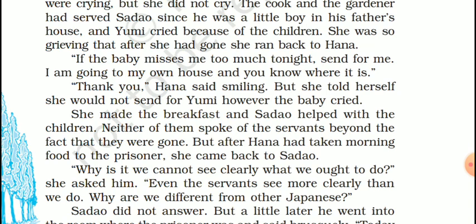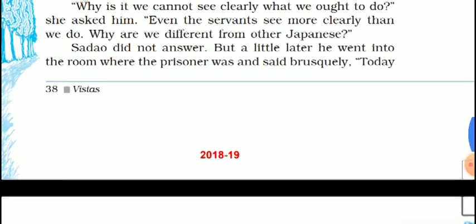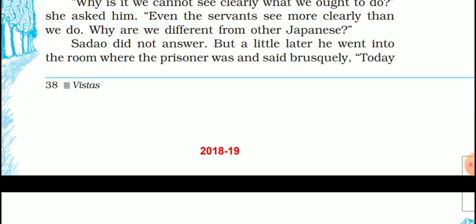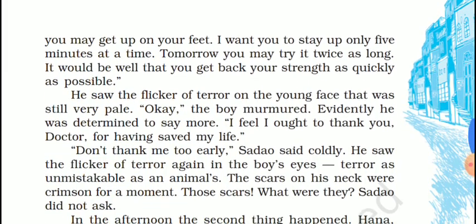She made the breakfast and Sadao helped with the children. Neither of them spoke of the servants beyond the fact that they were gone. But after Hana had taken the morning food to the prisoner she came back to Sadao: 'Why is it we cannot see clearly what we ought to do?' she asked him. 'Even the servants see more clearly than we do. Why are we different from other Japanese?' Sadao did not answer, but a little later he went into the room where the prisoner was and said briskly, 'Today you may get up on your feet. I want you to stay up only five minutes at a time. Tomorrow you may try it twice as long. It would be well that you get back your strength as quickly as possible.'